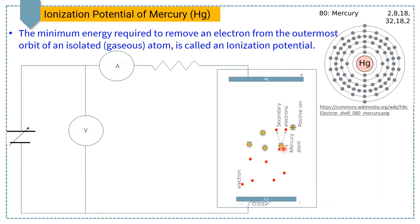At this voltage or potential, the current value suddenly increases. At this potential, all electrons — primary and secondary — reach the anode plate. As a result, we suddenly get a large amount of current at the ammeter.